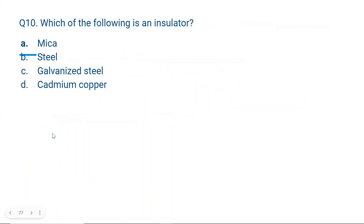Question number 10 — the last question. Which of the following is an insulator? An insulator means a bad conductor of heat and electricity. Steel, galvanized steel, and cadmium copper are all good conductors of heat and electricity. Mica is an insulator of both electricity and heat, so the correct answer is A — mica.